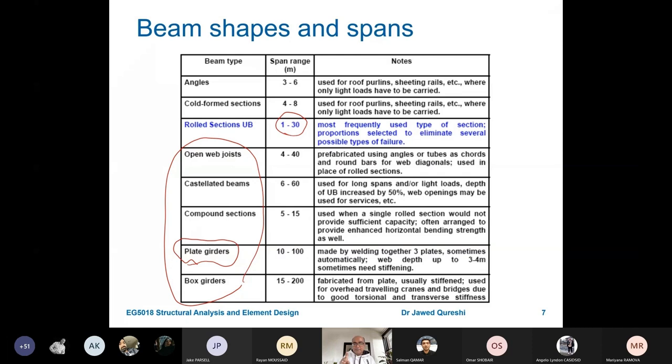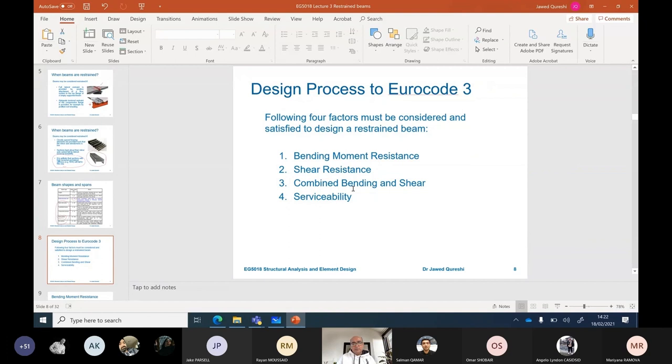So now there are three things: one is bending, other is shear, and third is serviceability or deflection. Which means that I should check restrained beams for three things: bending, shear, and serviceability or deflection.